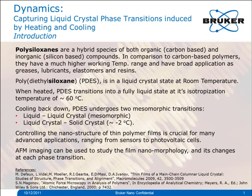Polydiethylsiloxane, PDES, is in a liquid crystal state at room temperature. When heated, PDES transitions into a fully liquid state at its isotropization temperature of about 60 degrees C. Cooling back down, PDES undergoes two mesomorphic transitions: liquid to liquid crystal, and liquid crystal to solid crystal at about minus 2 degrees C. Controlling the nanostructure of thin polymer films is crucial for many advanced applications, ranging from sensors to photovoltaic cells. AFM imaging can be used to study the film nanomorphology and its changes at each phase transition.